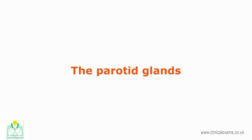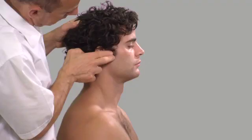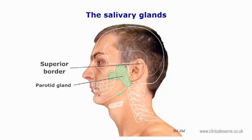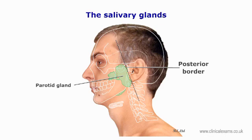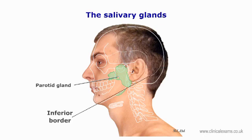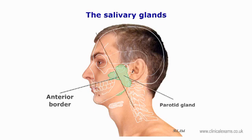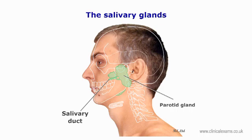The parotid glands: the superior border is at the level of the posterior two-thirds of the lower border of the zygomatic arch. The posterior border is in front of the external acoustic meatus, the mastoid process, and the anterior border of the sternocleidomastoid muscle. The inferior border is just below the angle of the mandible. The anterior border lies over the masseter. The salivary duct drains opposite the second upper molar tooth.